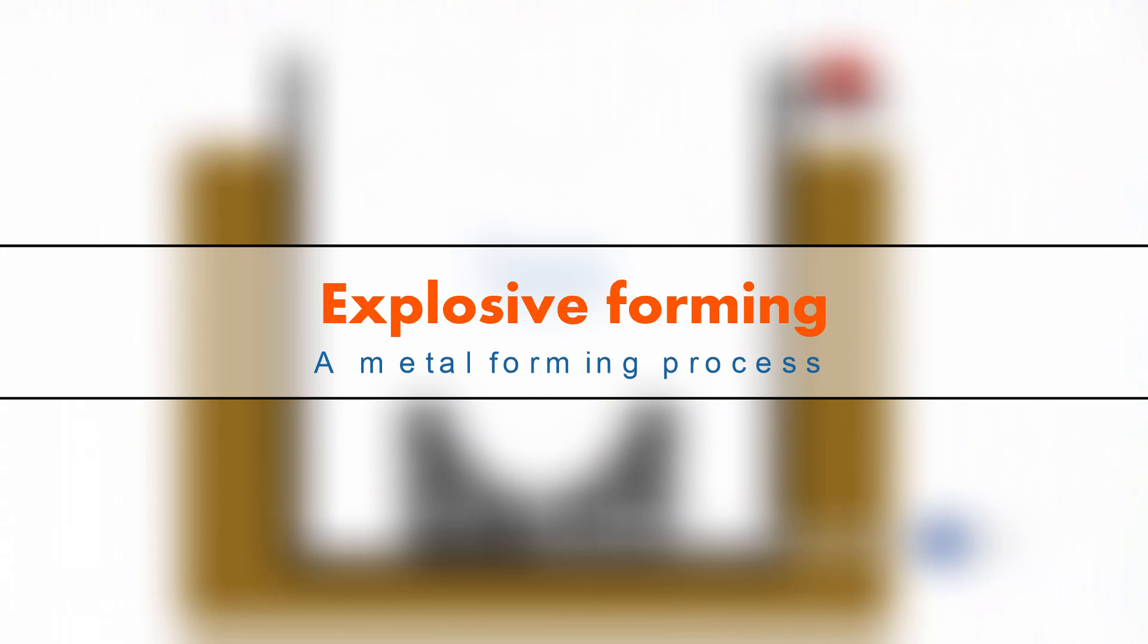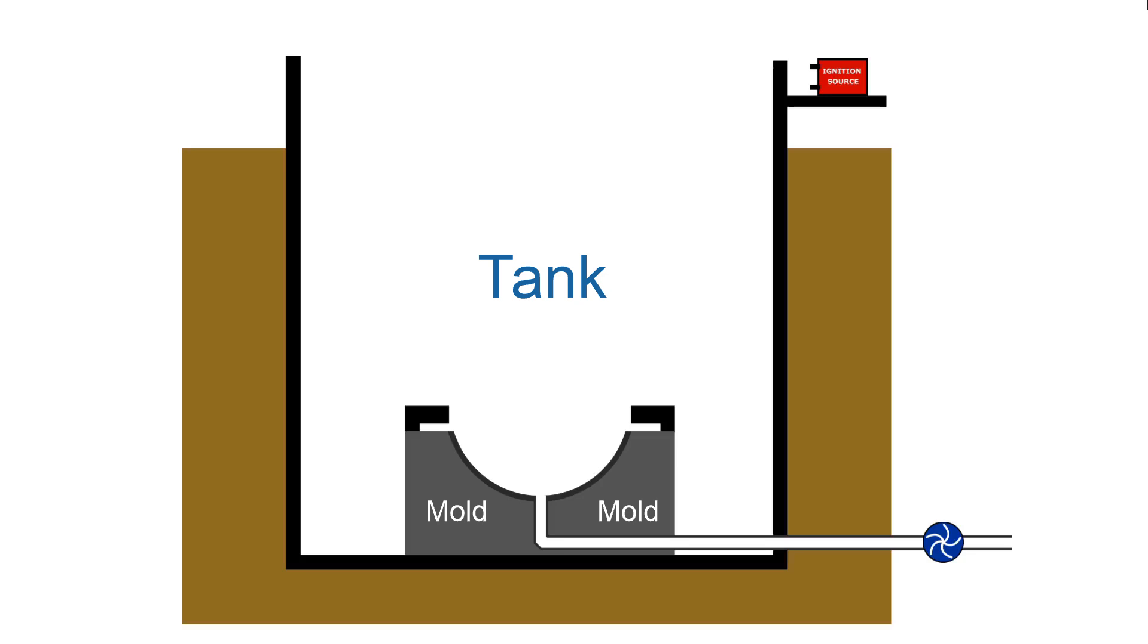Explosive forming is a metal working process that uses energy from an explosive to form a metal into the shape of a mold.